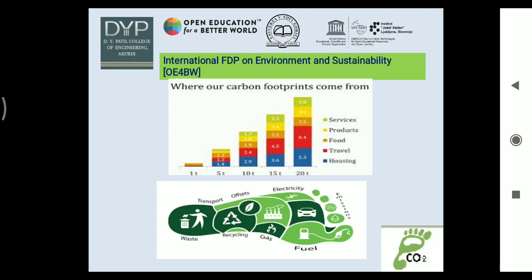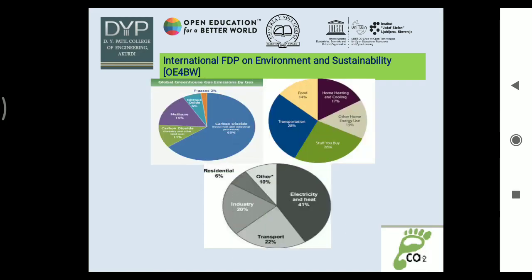Where do our carbon footprints come from? From services, products, food, travel, housing, and electricity use. These two images and the graph show how CFP is increasing day by day. The pie diagrams also make clear how atmospheric gases lead to environmental hazard — the major part is CO2 at 65%, from different activities.